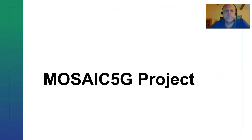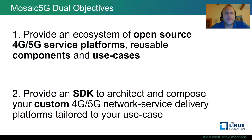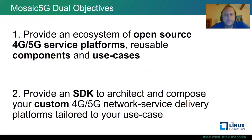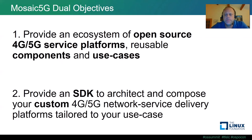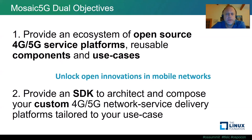Quickly covering the third project before demonstrations: Mosaic 5G is the newest addition to Open Air Interface. It was its own project until the middle of this year, and the objective hasn't changed — we just brought it into Open Air Interface because typically Mosaic 5G was used with Open Air Interface. The objectives are to provide an ecosystem of open source 4G and 5G service platforms, reusable components and use cases, and at the same time to provide an SDK to architect and compose custom 4G/5G network service delivery platforms tailored to the use case.